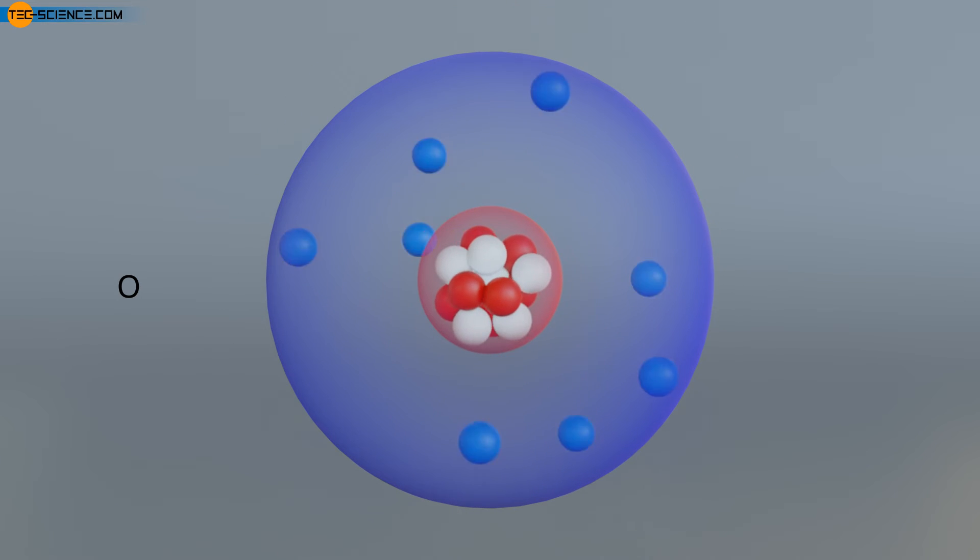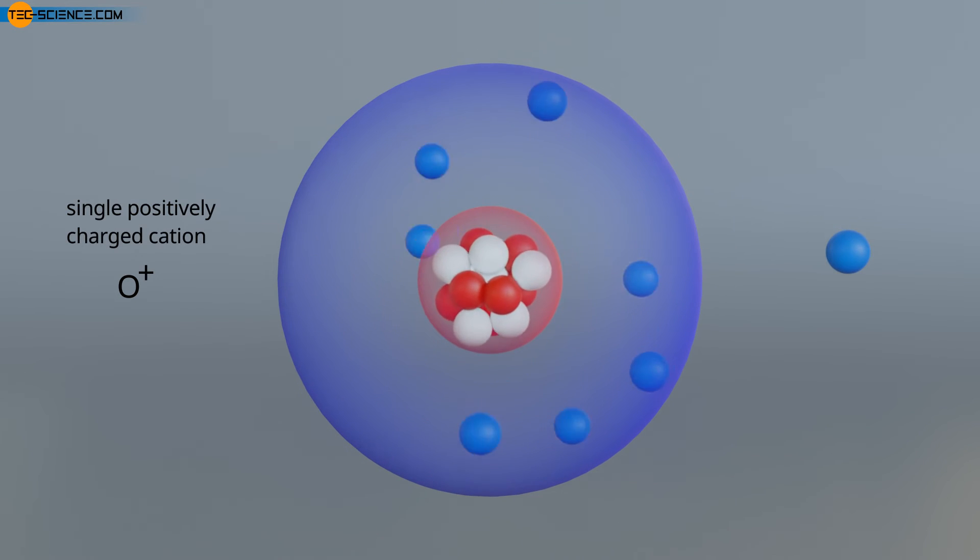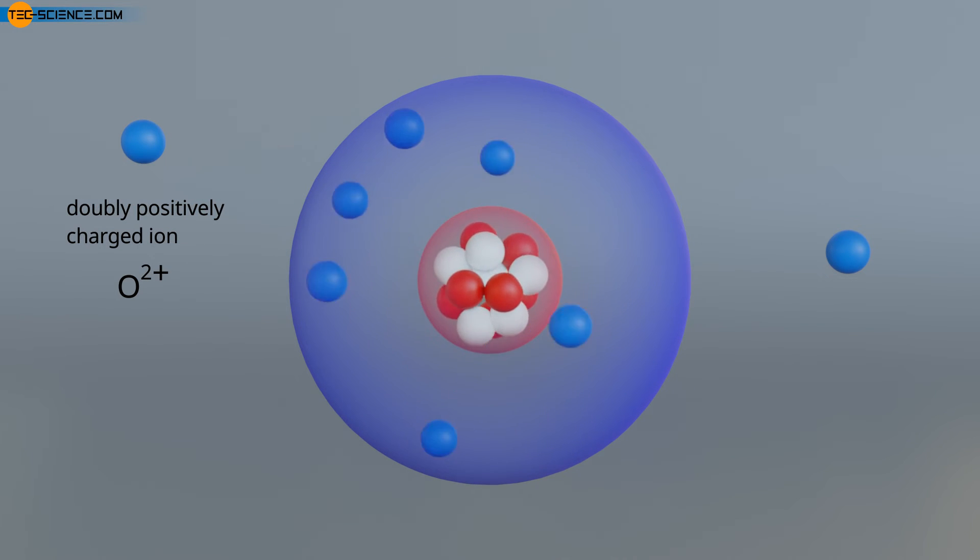Conversely, a deficiency of electrons leads to a positively charged atom, which is then called a cation. In the case of a single positively charged cation, one electron is absent from the atomic shell. If two electrons are missing, one speaks of a doubly positively charged ion.